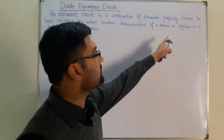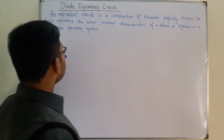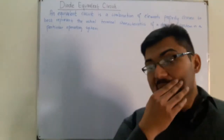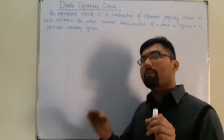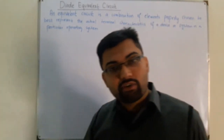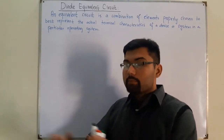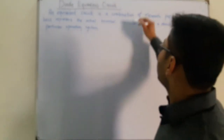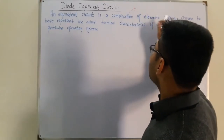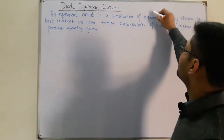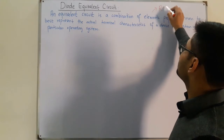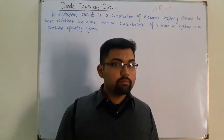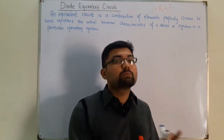What we do is replace the particular device by its equivalent combination of elements. These elements are the basic electrical elements — they could be R, L, or C. We combine them in such a way that we have the same response as the particular material we are removing.